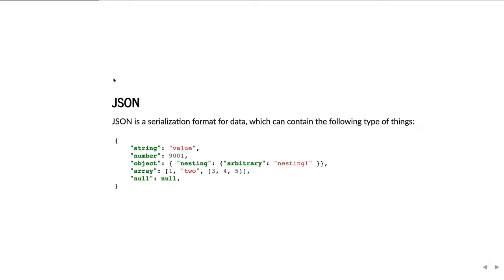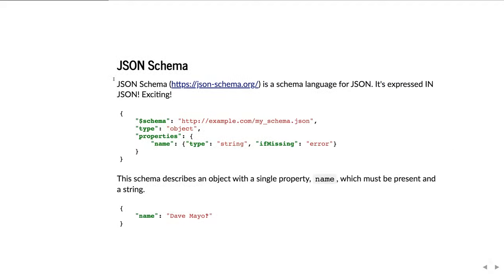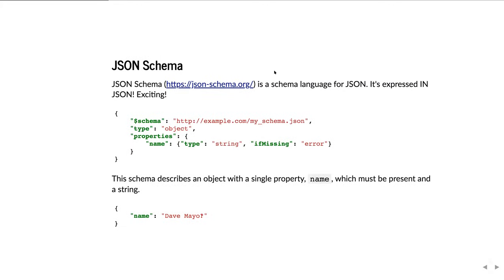A serialization format is essentially a way that you can write data to disk that you can then turn back into data in a system. JSON Schema is a schema language for JSON expressed in JSON itself — essentially JSON objects that describe the structure of other JSON. The full discussion and tutorial on it is outside the scope of this presentation, but the documentation is generally pretty good and should be helpful if you want to learn more.